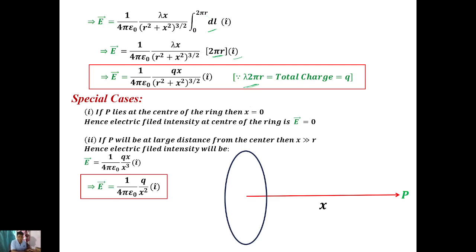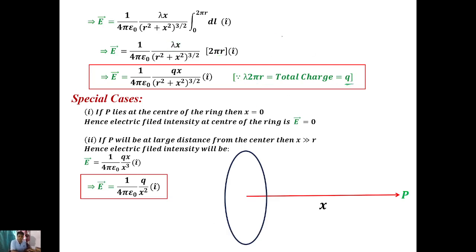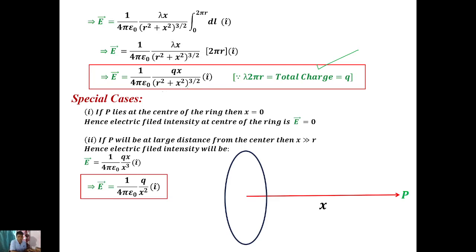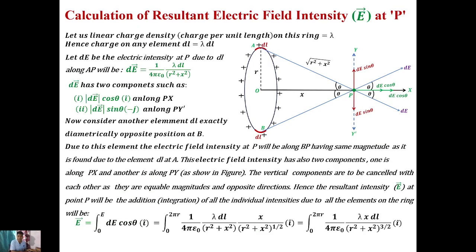Now 2πR × λ equals the total charge Q on the ring, since 2πR is the total circumference and λ is the charge per unit length. So 2πR·λ = Q. The final expression for the electric field intensity at point P on the axis is: E = (1/4πε₀) · (Qx) / (R² + x²)^(3/2) · i-cap. This means for any arbitrary point on the x-axis, the electric field intensity will have this value.